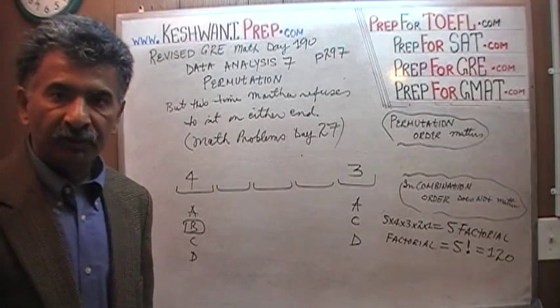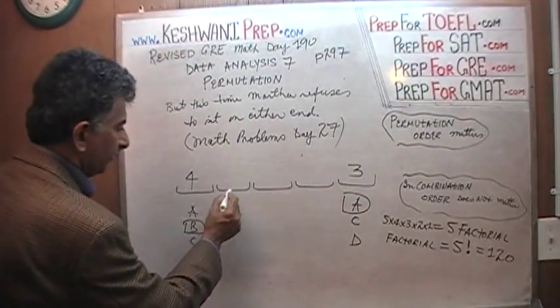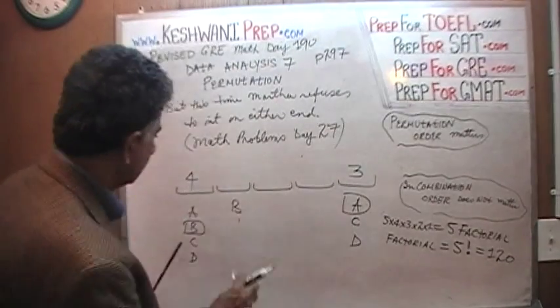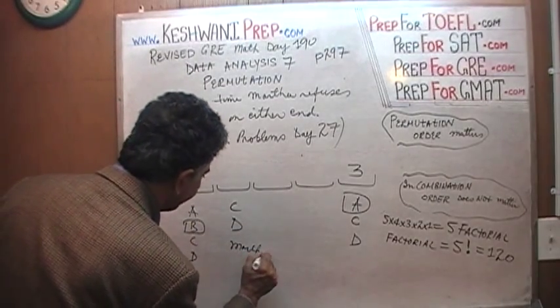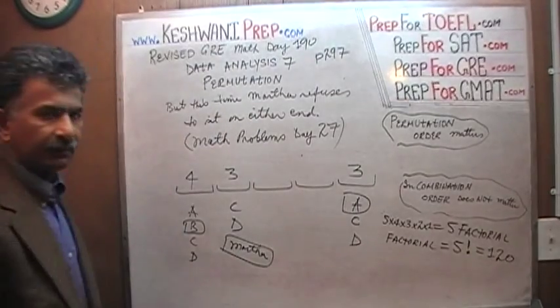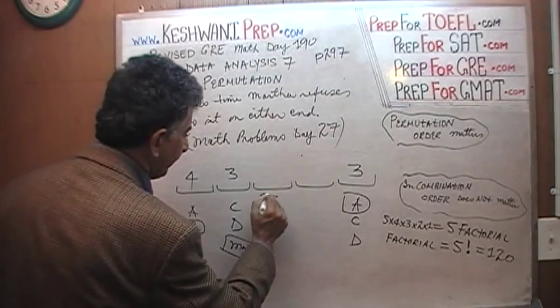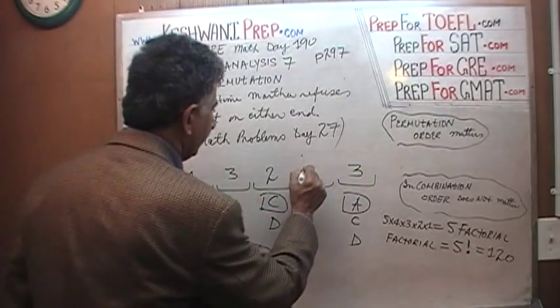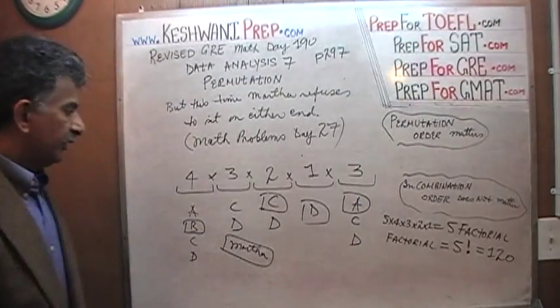So two people have been chosen out of five. We have only three people left. We can either put C, we can either put D or we can put Martha. We have three choices right here. Let's pretend that we put Martha in this spot. How many different ways can we fill up this spot? Well two ways, either C or D. And finally there's only one way we can fill up that spot which is whoever is left. In this case the person who is left is D.